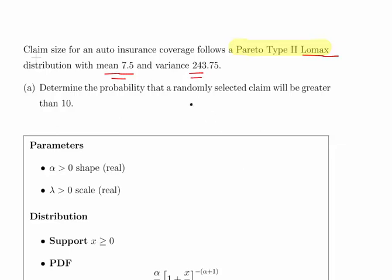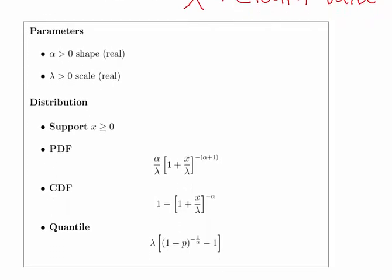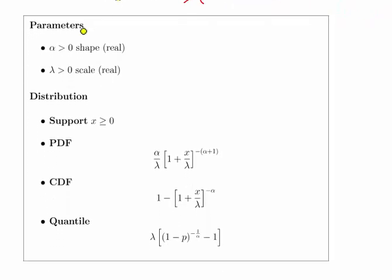So X is the value of a claim, and it's modeled using a Pareto distribution. Here are the details for the Pareto Type 2 distribution. Remember, there's a Type 1 distribution as well. We have alpha, the shape parameter, and lambda, the scale parameter.